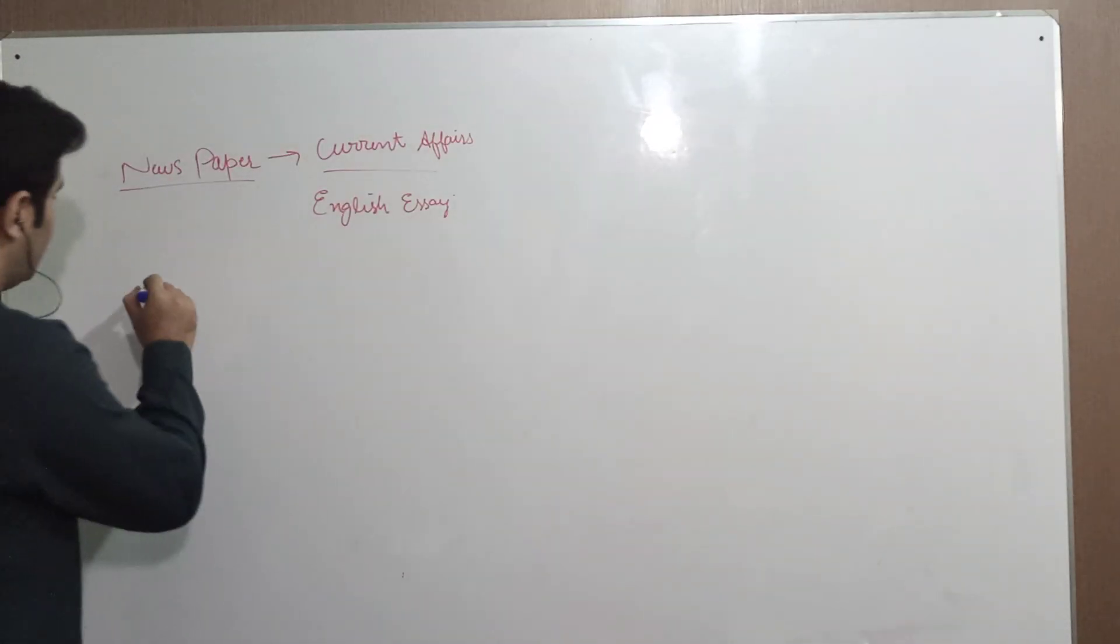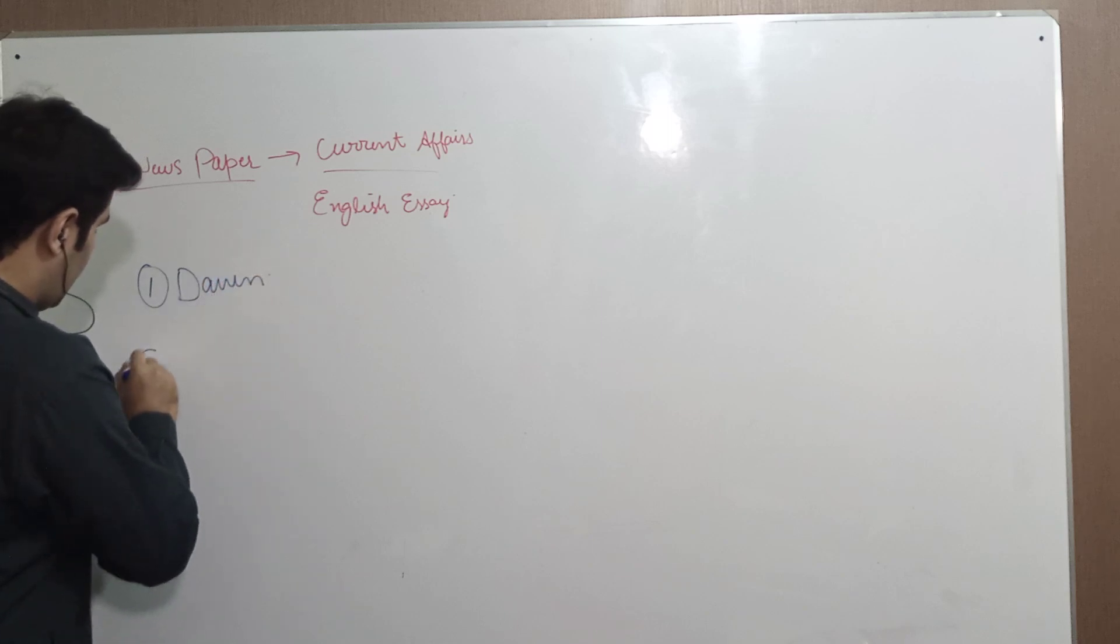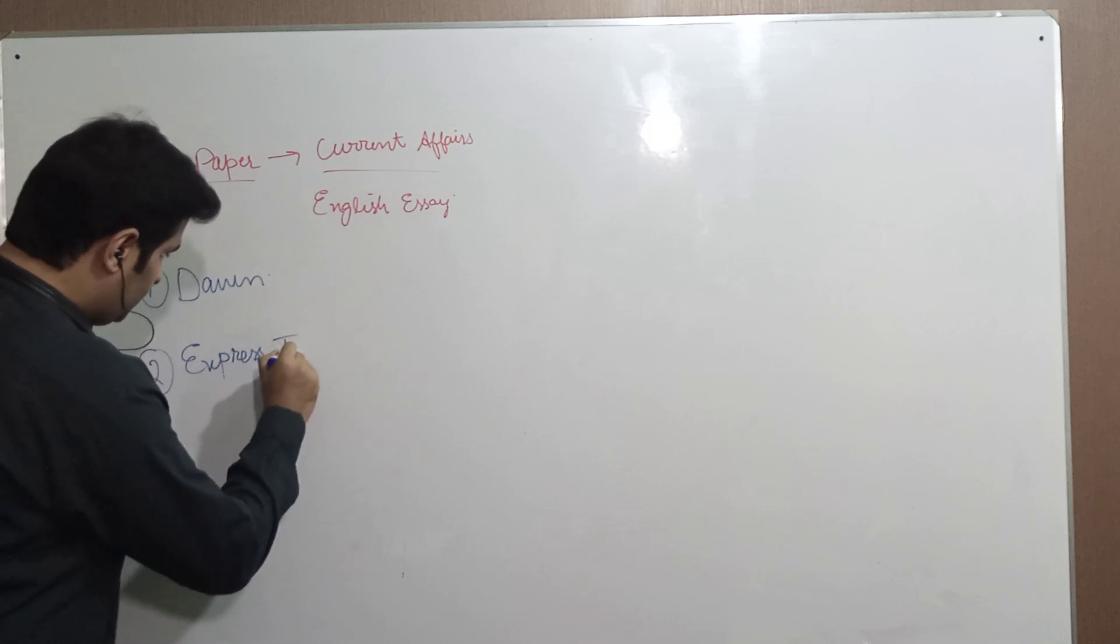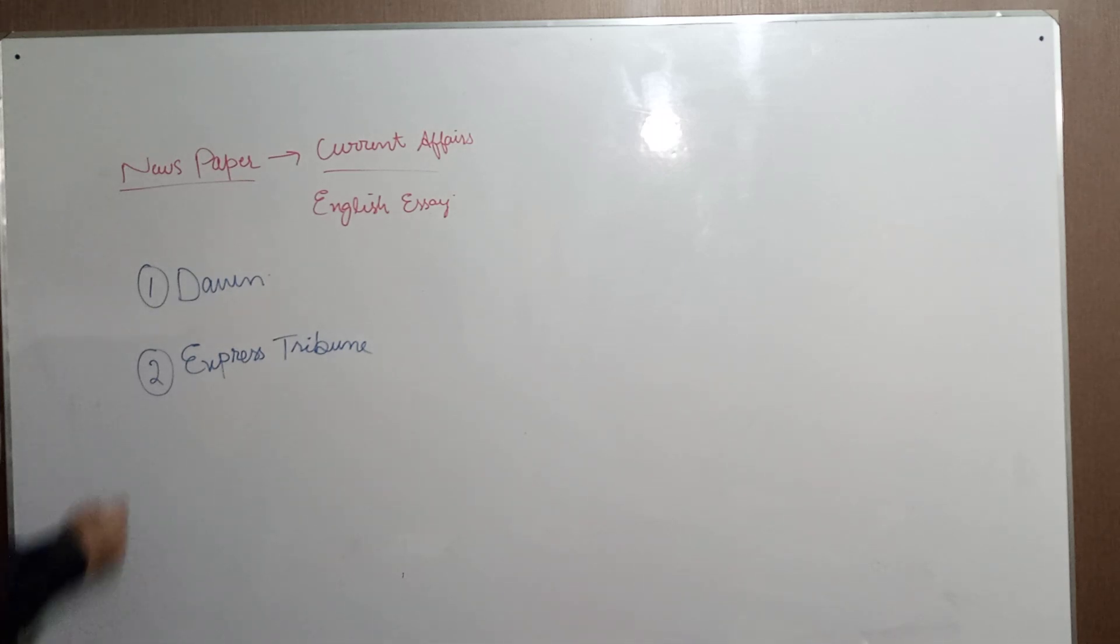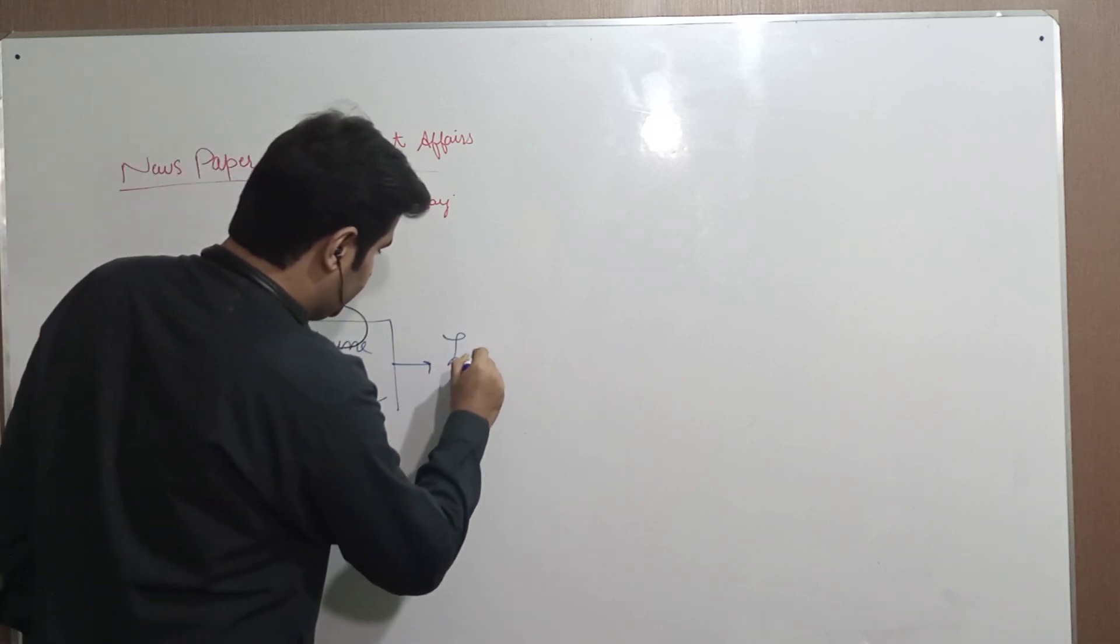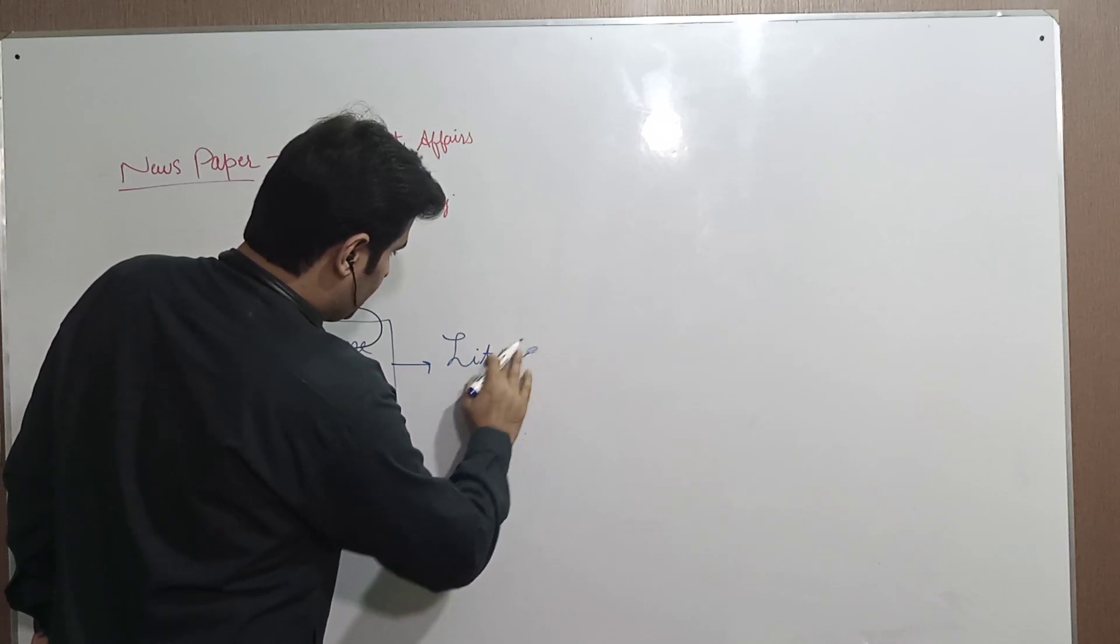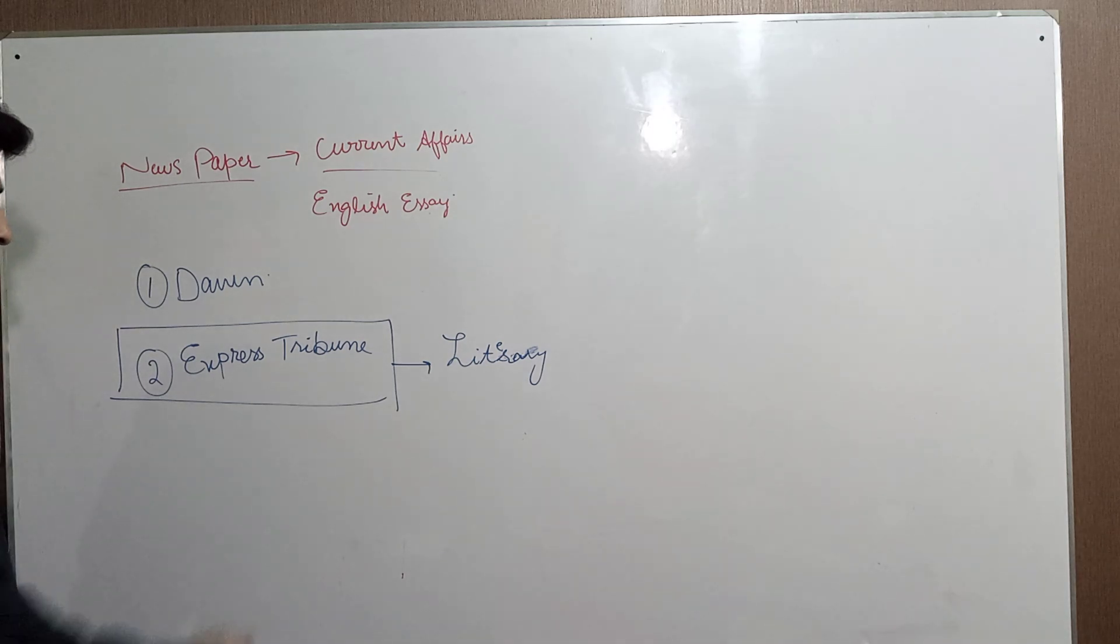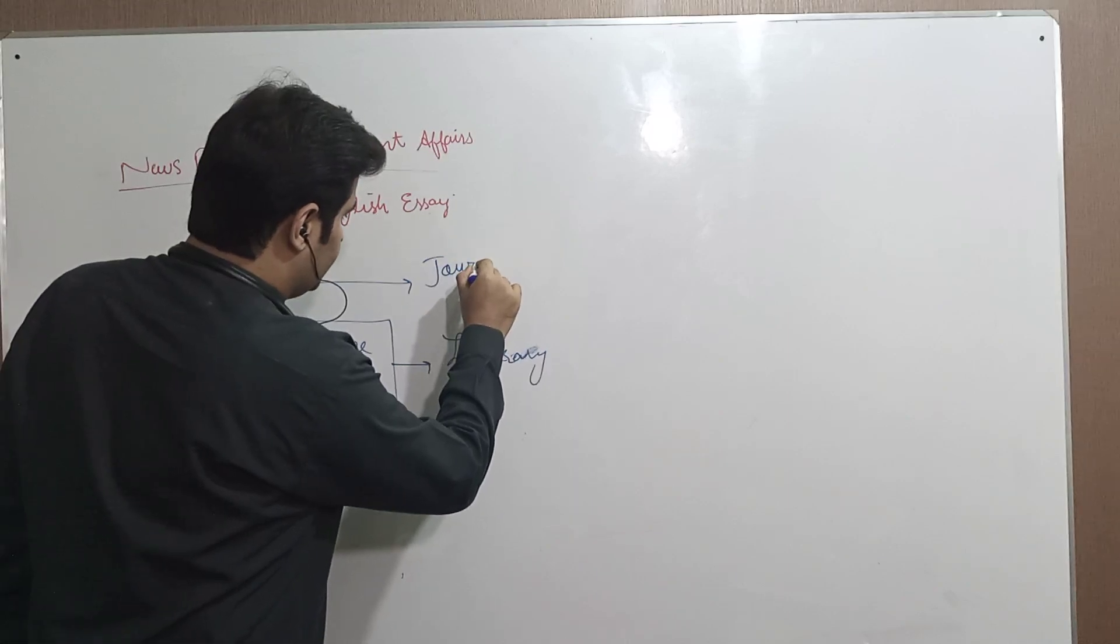Frequently read newspapers: one is Dawn, one is Express Tribune. One of the most frequently asked questions is about the English language literary style. Express Tribune's language is a literary language, but Dawn's language is a journalistic language.